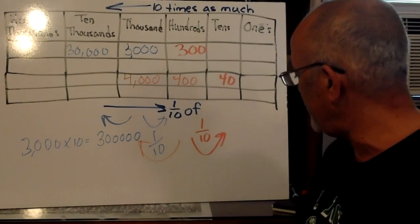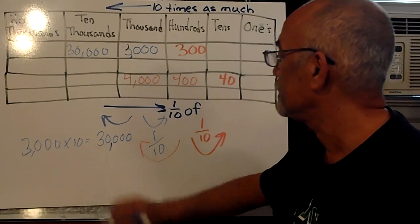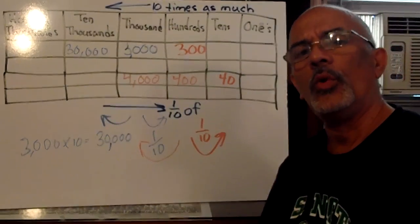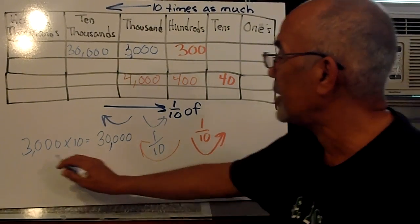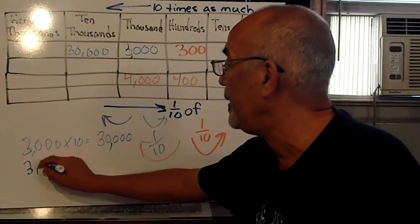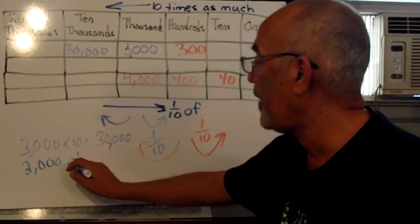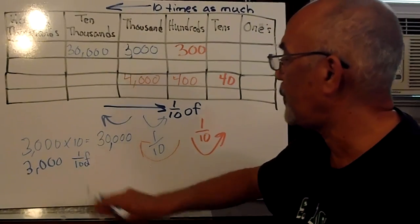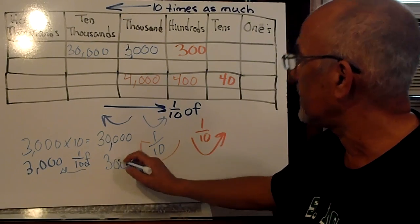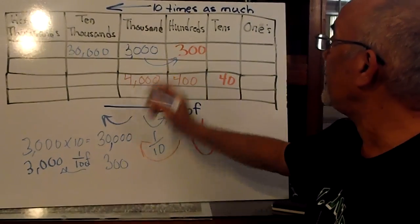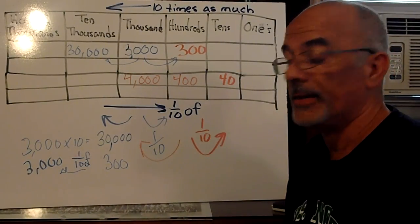I'm sorry. We have 3 zeros. We'll make it 4. And if we want to know what 1 tenth of it is, we go in the opposite direction. So if we have 3,000, and we want to know what 1 tenth of 3,000 is, we take away a zero. So 1 tenth of 3,000 is 300. 10 times is 30,000.